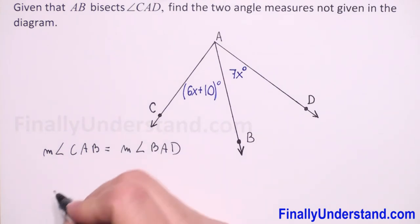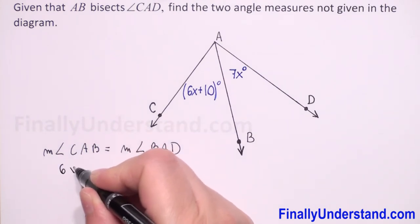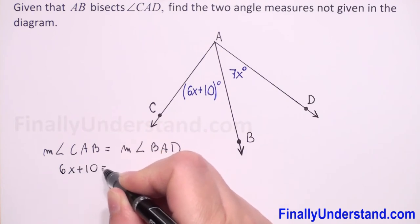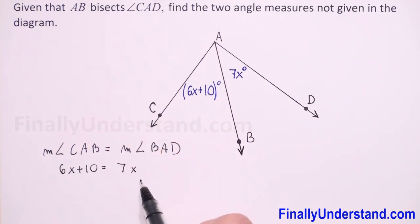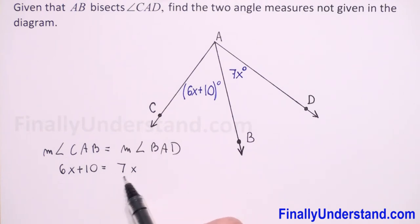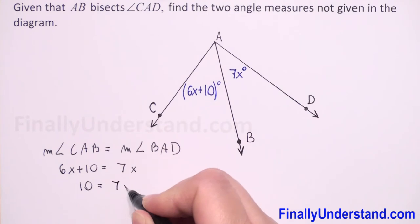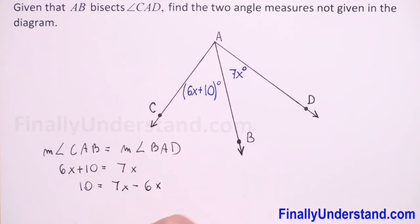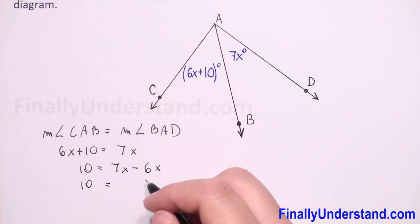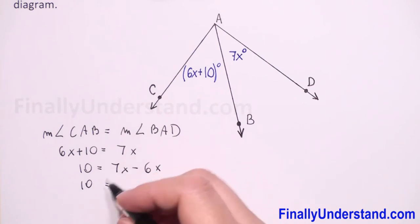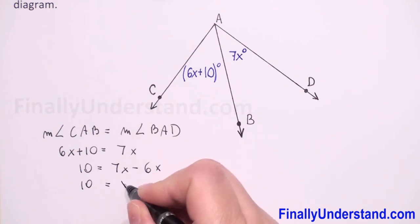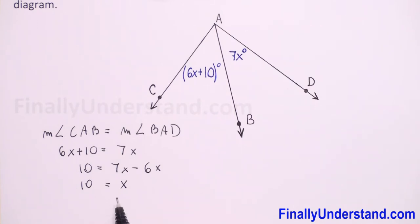So we have 6x plus 10 is equal to 7x. I will move 6x to the right side, since 7 is greater, so we'll have a positive number. We get 10 is equal to 7x minus 6x, which is 1x — we just write x, since 1 times x is x.